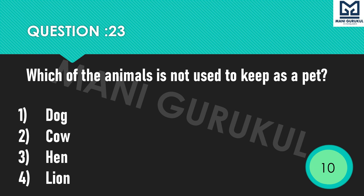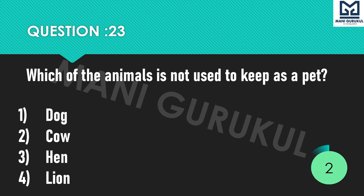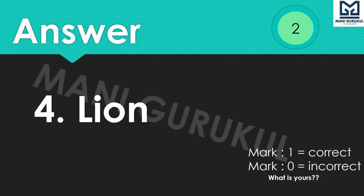Question 23: Which of the following animals cannot be kept as a pet? Options: 1st Dog, 2nd Cow, 3rd Hen, 4th Lion. Time's up. Answer is 4th: Lion.